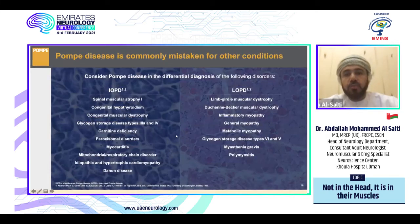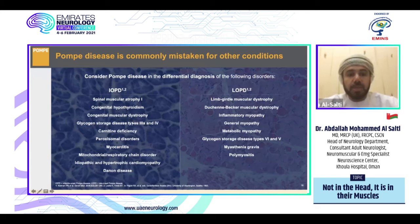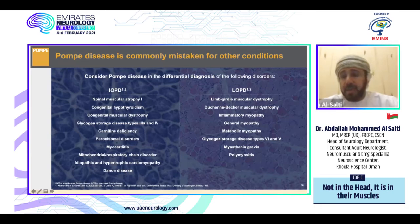The differential diagnosis of Pompe disease includes many conditions. For infantile onset, Pompe is confused with spinal muscular atrophy, congenital hypothyroidism, congenital muscular dystrophy, glycogen storage disorders, carnitine disorders, myocarditis, mitochondrial disease, or other congenital cardiomyopathies. For late onset, the most common mimics are limb girdle muscular dystrophy, Duchenne/Becker muscular dystrophy, inflammatory myopathy, and other metabolic myopathies.